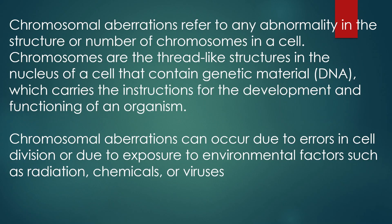Chromosomal Aberrations refer to any abnormality in the structure or number of chromosomes in a cell. Chromosomes are the thread-like structures in the nucleus of a cell that contain genetic material, also known as DNA, which carries the instructions for the development and functioning of an organism. Chromosomal Aberrations can occur due to errors in cell division or due to exposure to environmental factors such as radiation, chemicals, or viruses.